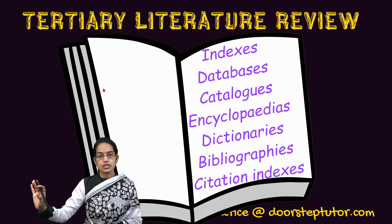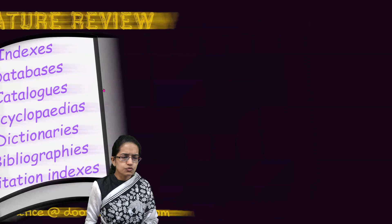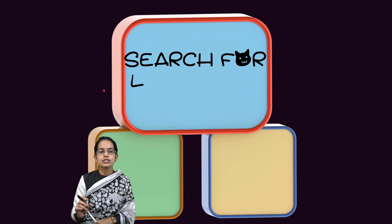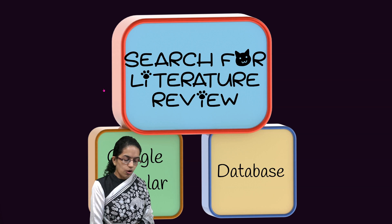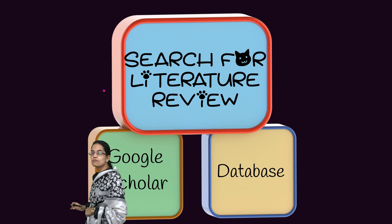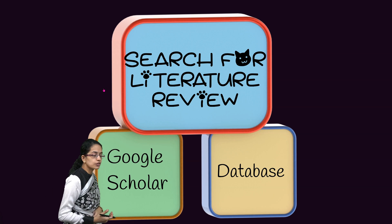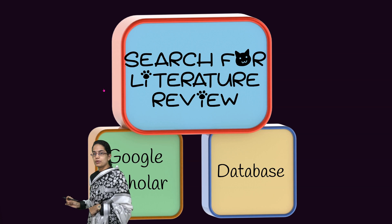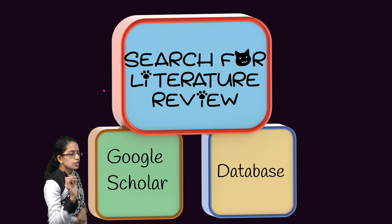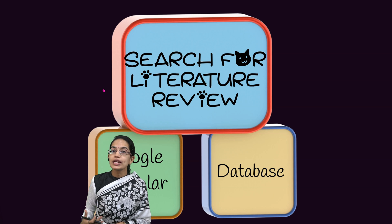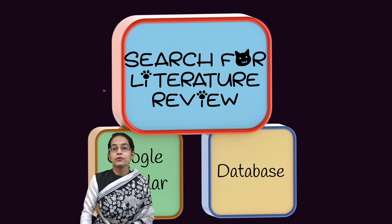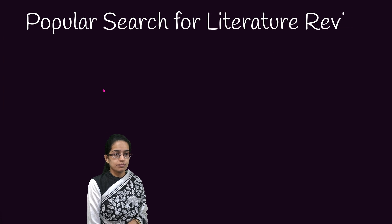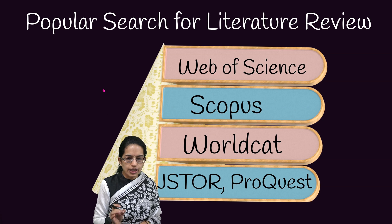Once you understand the types of literature review, you need to know where to look. There are two important starting places: Google Scholar and various databases where publications are maintained. If you have not joined a university and don't have access to journals or databases, Google Scholar is a perfect place to begin — you will get most of the information and research there. That is an elementary step. As you go deeper into research, you can arrange library access, get individual subscriptions to databases, and proceed further.